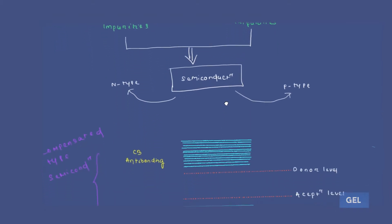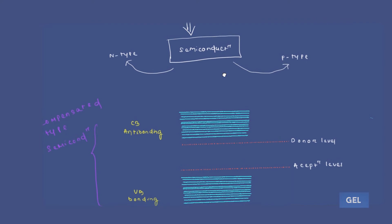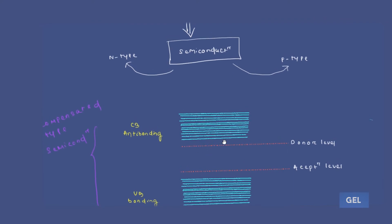How this happens can be understood from its band diagram. This is a very interesting band diagram — you can see here we have both donor level and acceptor level present. This is your conduction band (anti-bonding level) and this is your valence band (bonding level). We have added a pentavalent element as an impurity as well as a trivalent impurity to get p-type behavior.